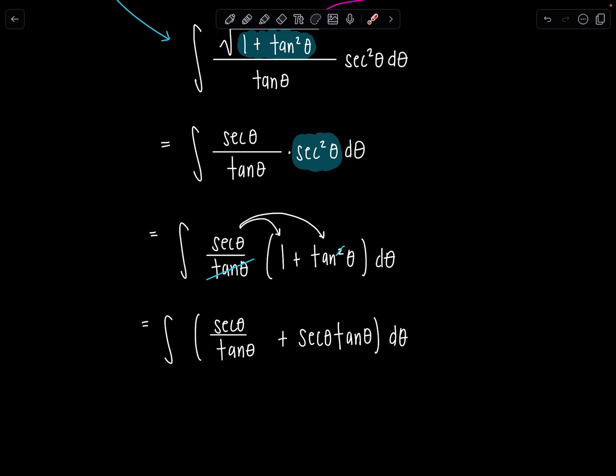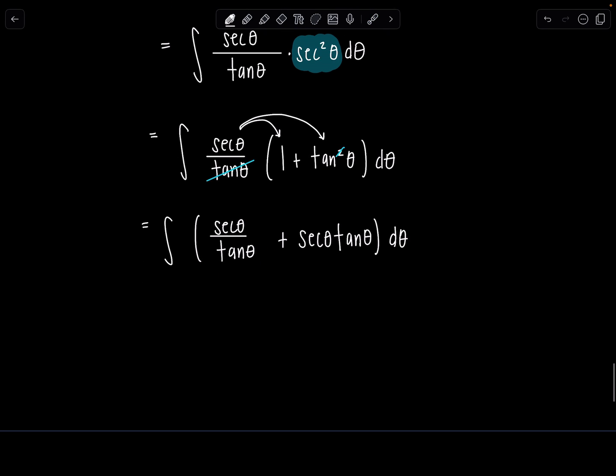What about this funky first term? Well, let's rewrite it in terms of sines and cosines because I'm not feeling good about it the way it is right now. Secant theta is 1 over cosine theta times. If I have tan theta in the denominator, that's the same as cotangent theta. So that's cosine theta over sine theta.